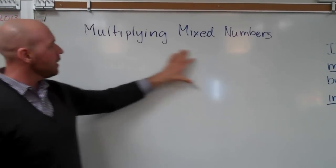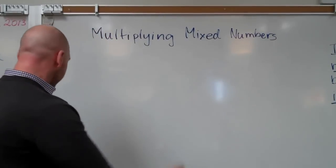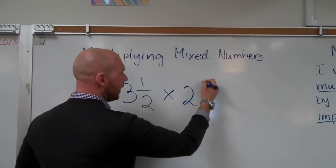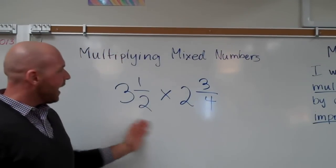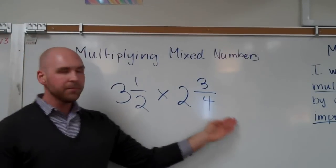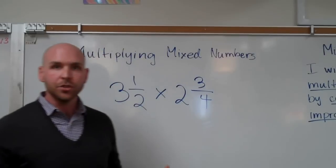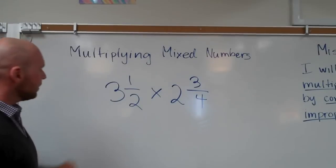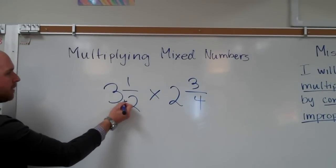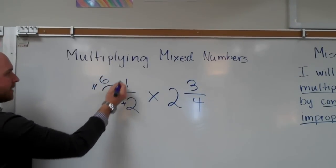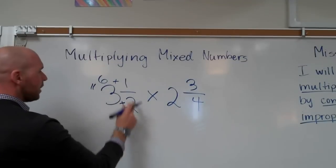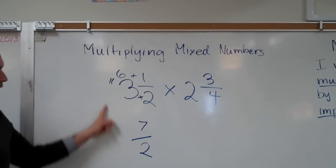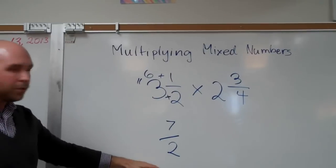Let's take a problem with mixed numbers. Here's one: three and one-half times two and three-fourths. At this point I've got a mixed number times a mixed number. I've got to convert these to improper fractions before I can multiply. The way we do this is we take the bottom number, multiply it times the whole number — two times three equals six — and add it to the top number. So six plus one is seven, and your denominator does not change. I just converted this mixed number to an improper fraction.